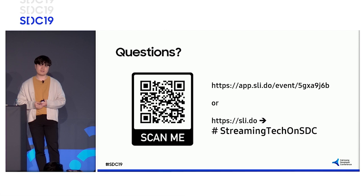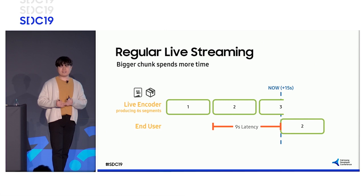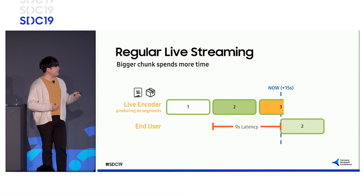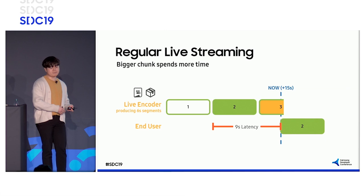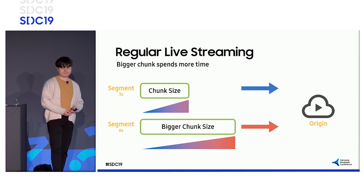Now let's go on to the causes of latency. Generally, for live streaming, contents are cut in lengths of six seconds for transmission, which is called a segment. If a user requests a streaming service when making the third segment, the server will select the completed second segment for streaming. Then the user has no choice but to see the video from nine seconds in the past. Furthermore, the longer the segment, the more time for creating is necessary. This recording of six seconds, including encoding and uploading to a server, takes much longer.